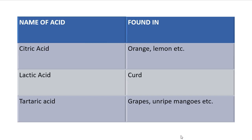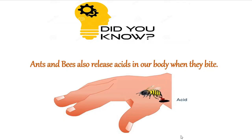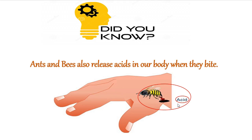Here is a very interesting fact: did you know ants and bees also release acids in our body when they bite? Similarly, a mosquito releases acid on your body when it bites, and because of that you feel itchiness. So next time a mosquito bites you, you know the science behind it — the mosquito releases acid on your body, which is why you feel itchy.